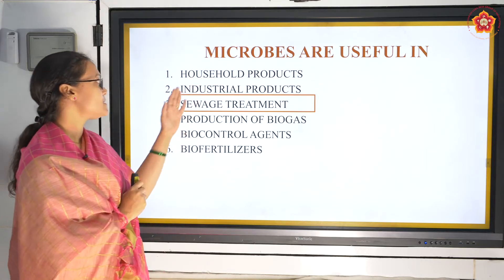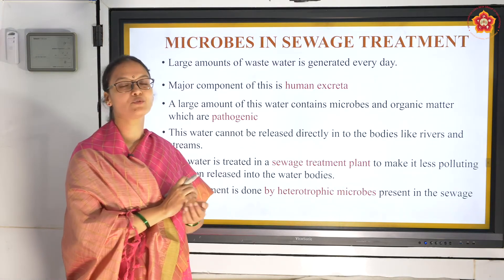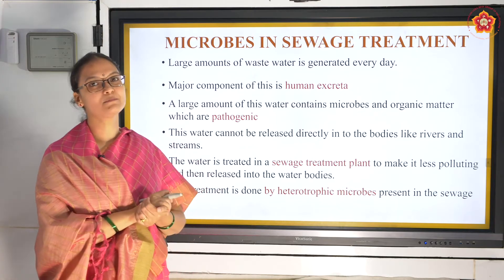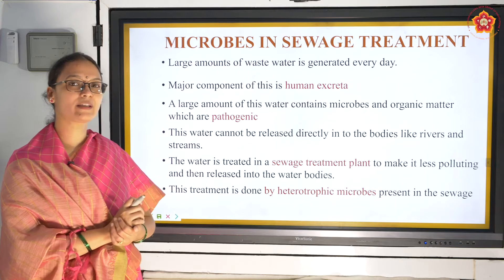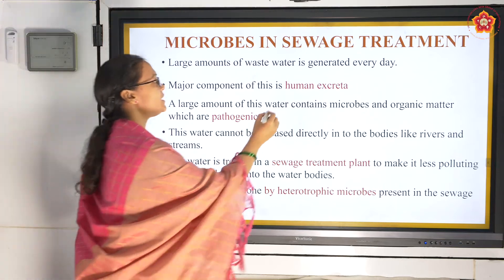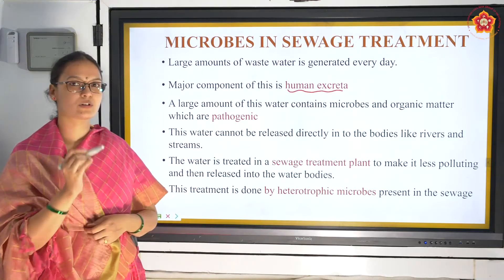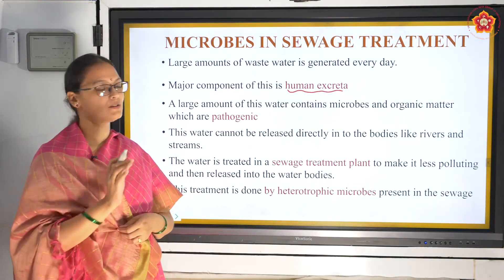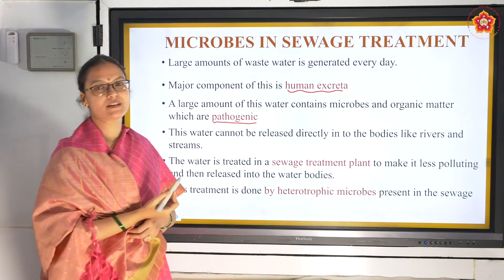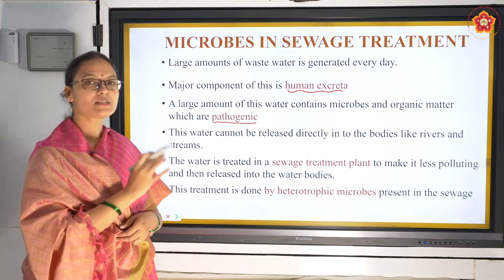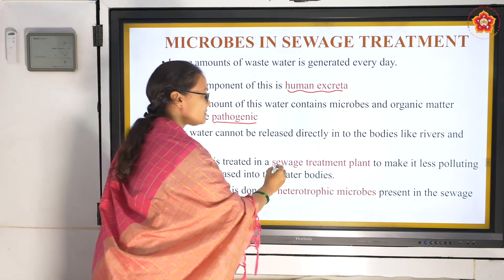Uses of microbes in sewage treatment. What is sewage? Sewage is municipal wastewater. It contains organic matter, especially human excreta. Can this water be mixed in water bodies like rivers and streams? No, because they contain highly pathogenic bacteria which can cause diseases. So this water has to be treated first in a sewage treatment plant.